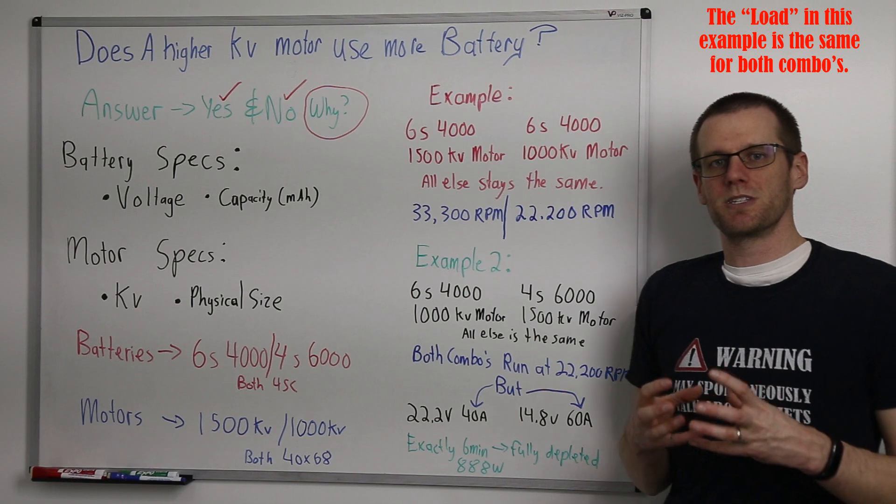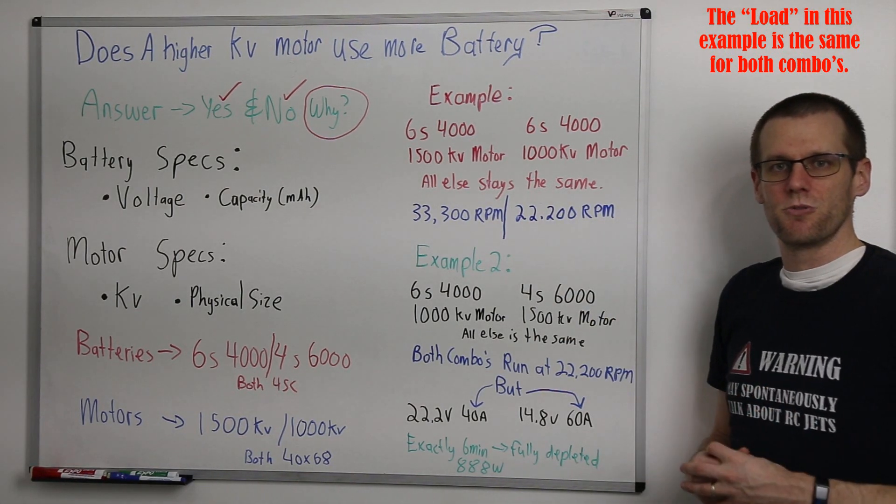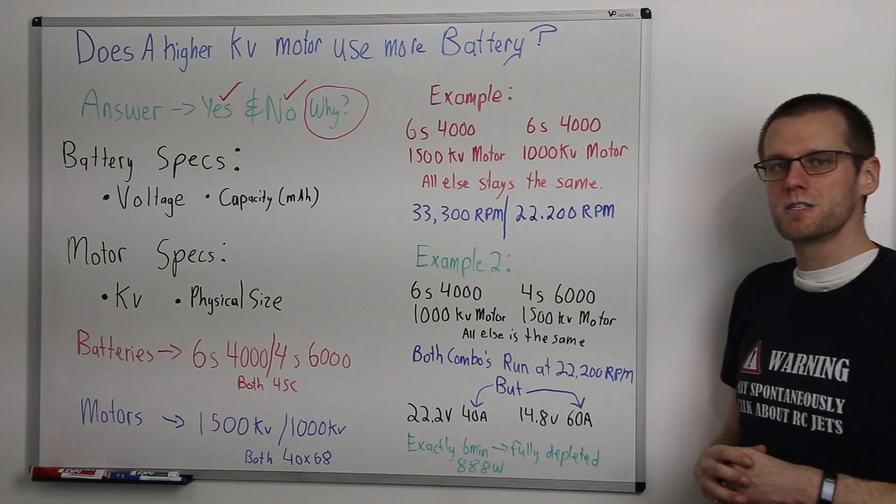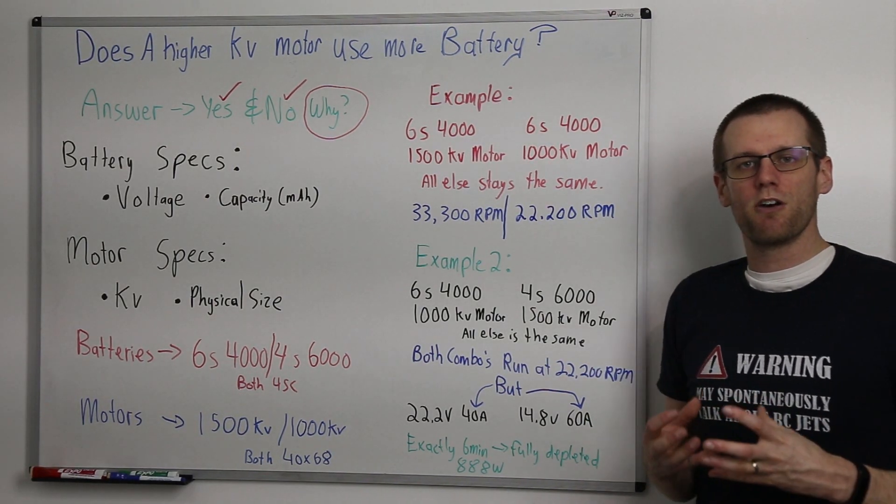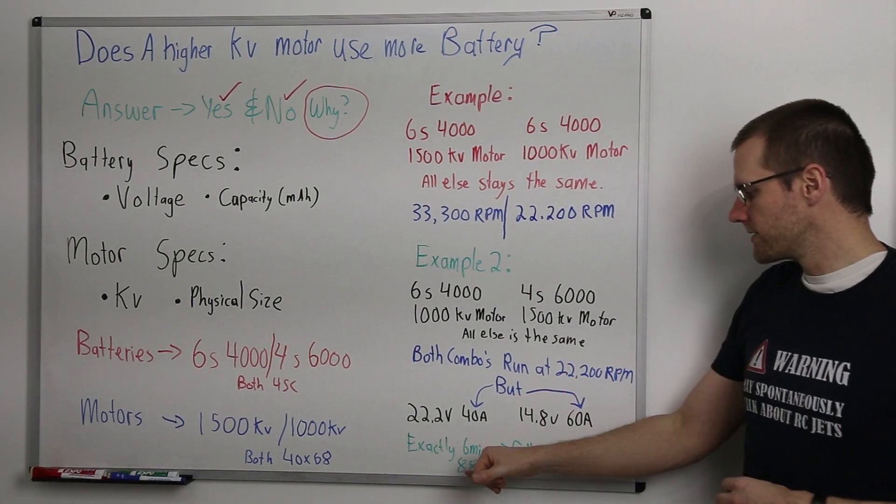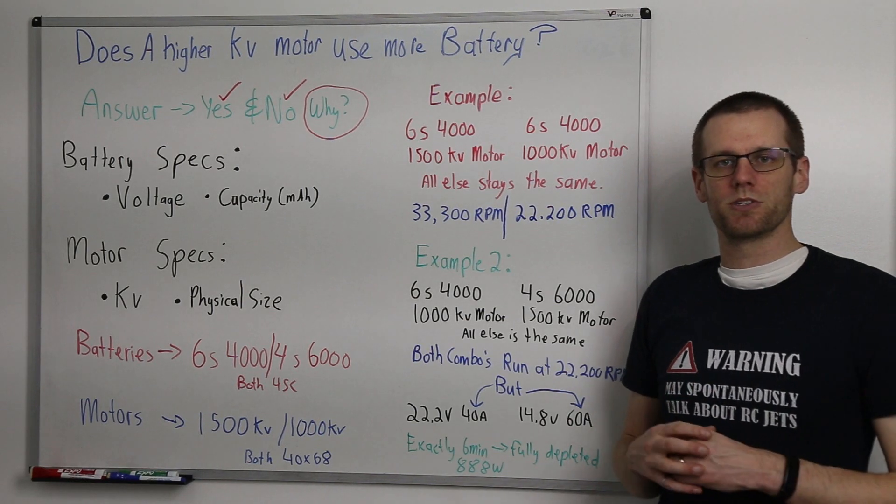And you'd see the exact same scenario carry out if you did it on the power system on the right hand side here. Exactly six minutes drawing 60 amps of power you would run out of battery power. And as we spoke about this is going to draw 888 watts for both power systems.